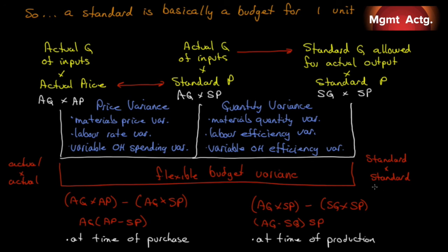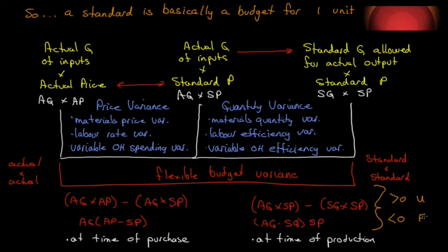If our variance is greater than zero, it's unfavorable. If it is less than zero, it is favorable. In the next video, we're going to go through a numerical example of each of these costs.